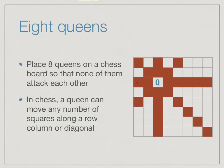The problem is to place eight queens on a chessboard so that none of them attack each other. A queen is a very special piece — it can move any number of squares along a row, column, or diagonal. So if you place a queen in the third row on the third column, it could move anywhere up or down that column, anywhere left or right on that row, and along both diagonals passing through square (3,3).